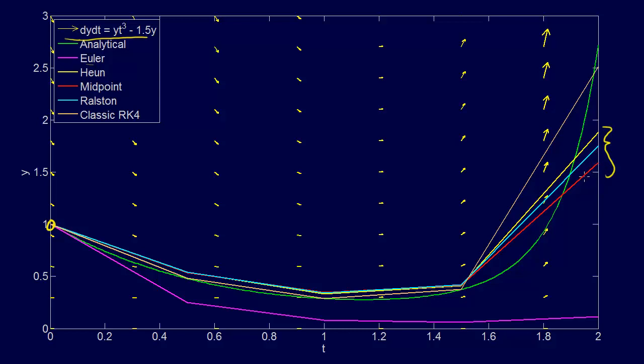midpoint is this red line, Ralston is this light blue line. We can really look at those all together. They've got very similar, they're all second order Runge-Kutta methods, and they've got fairly similar behavior.